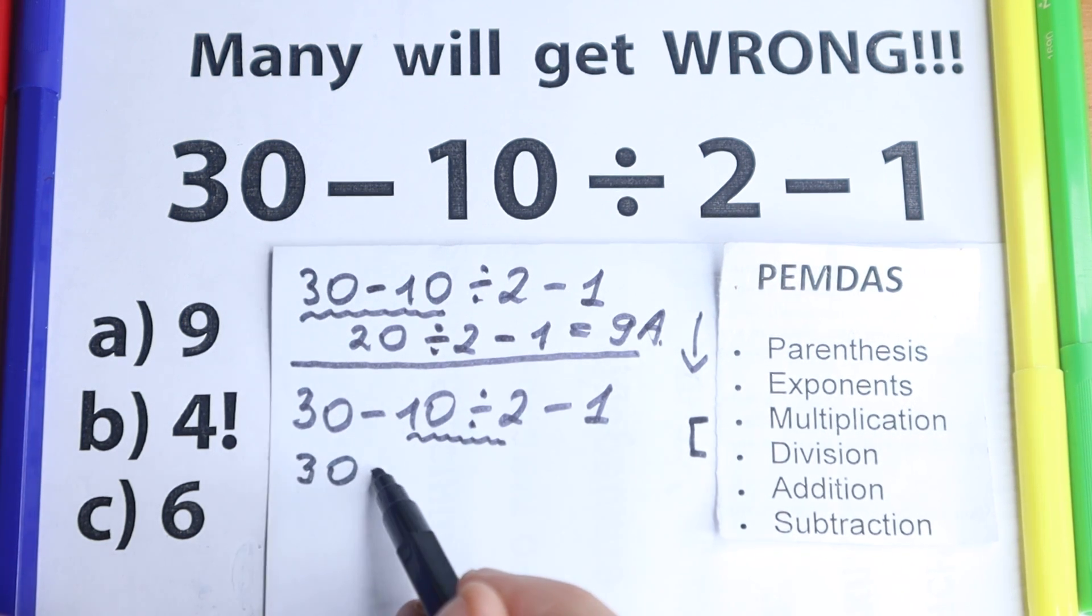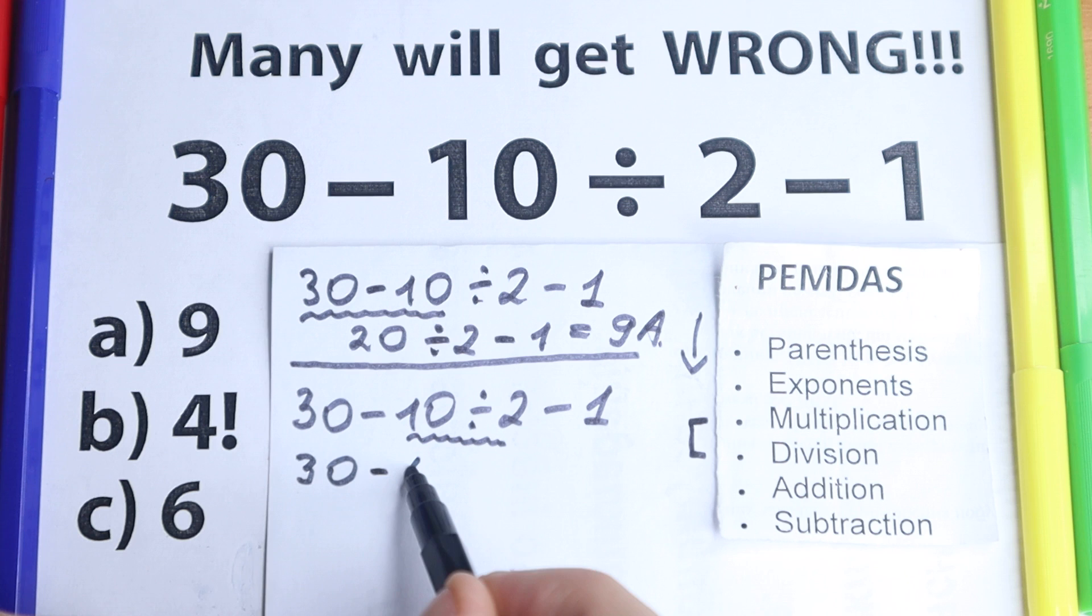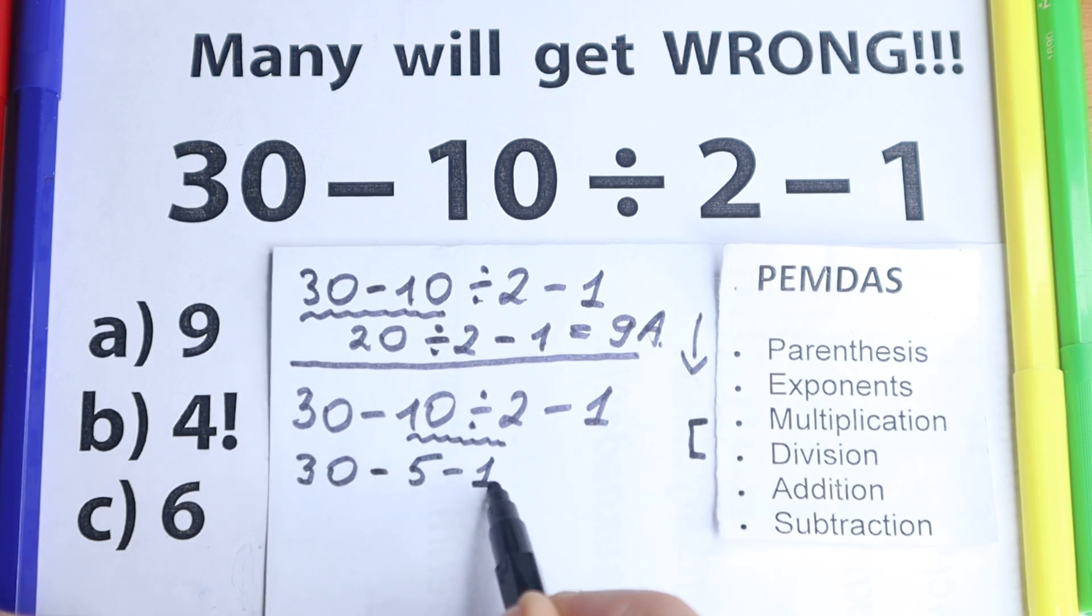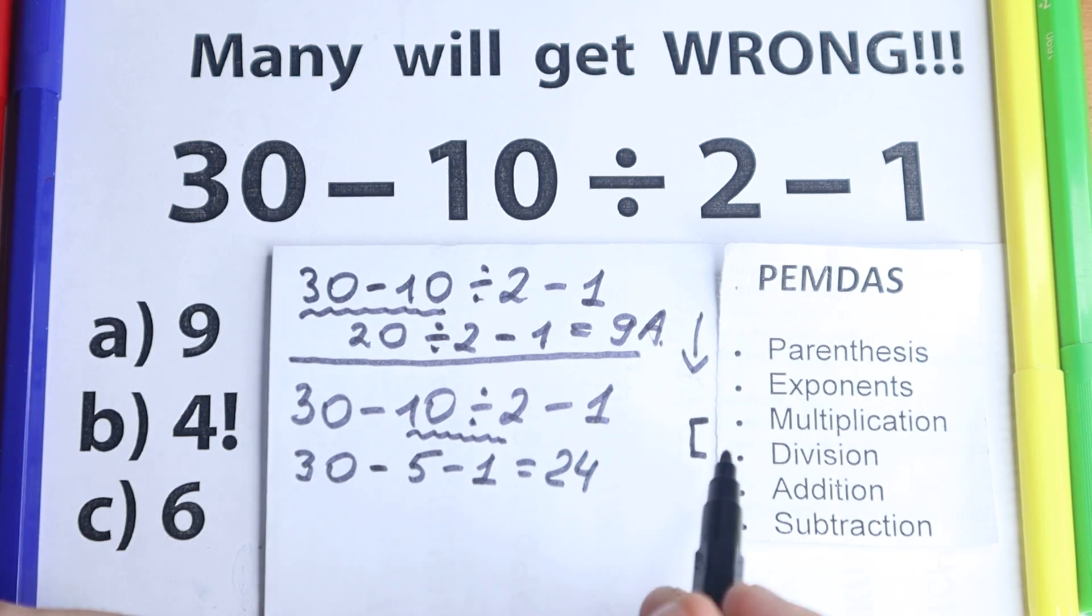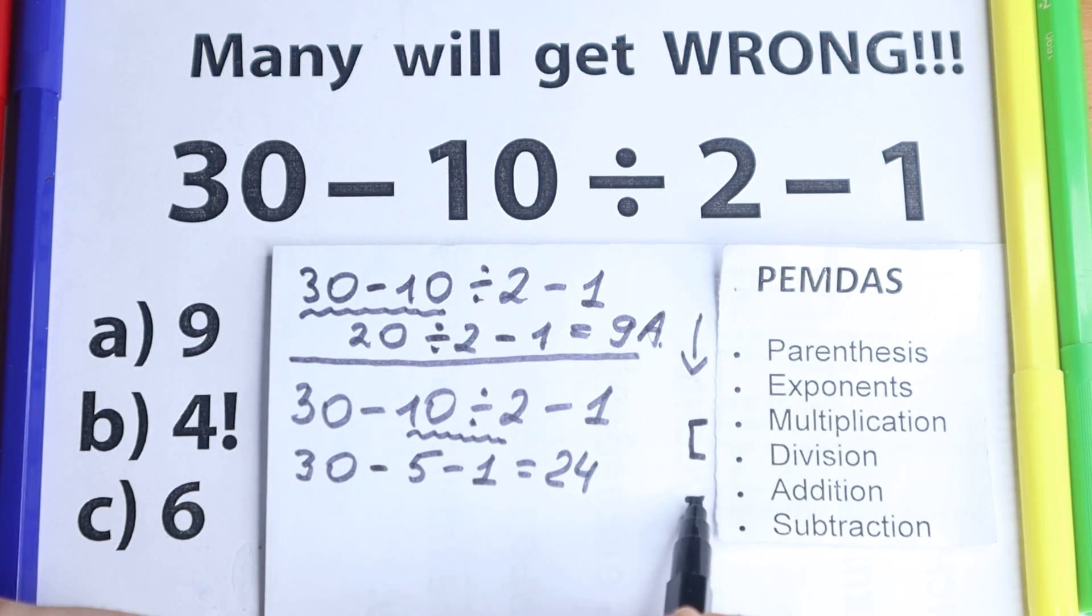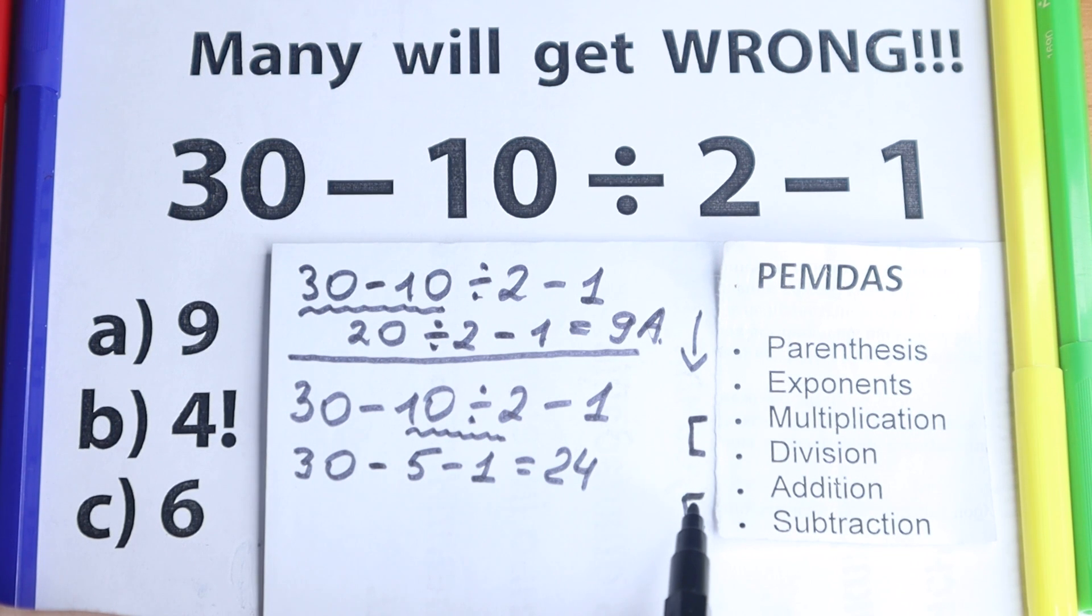We have 30 minus 10 divided by 2 equals 5 and minus 1. So 30 minus 5 minus 1 equals 24. As you can see, addition and subtraction is after multiplication and division.